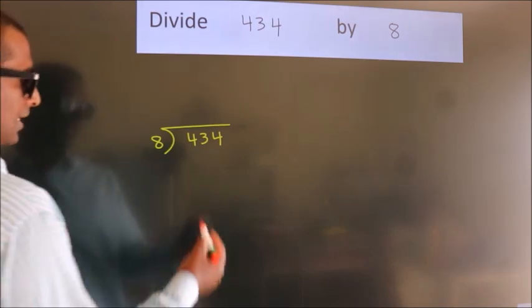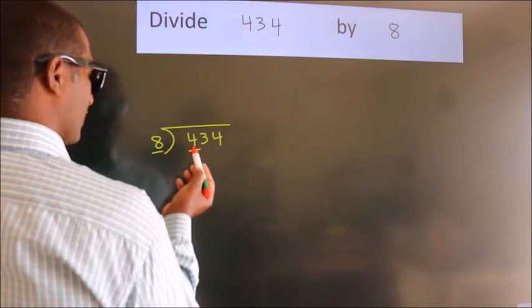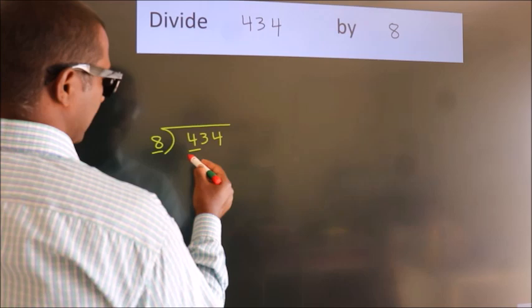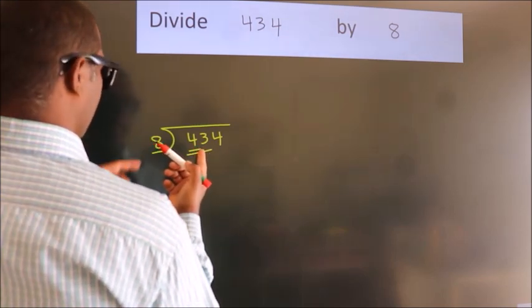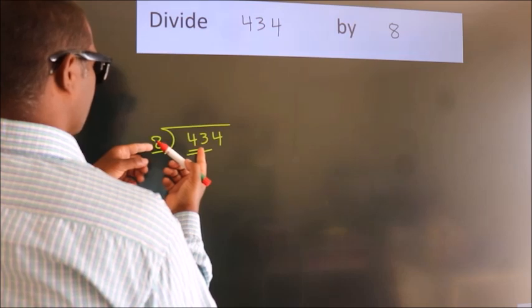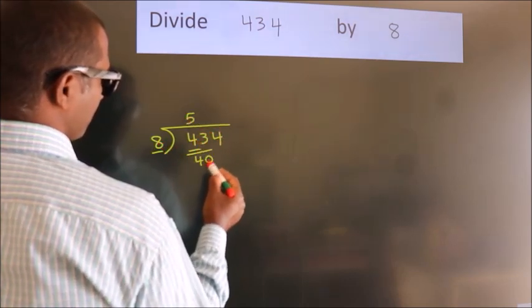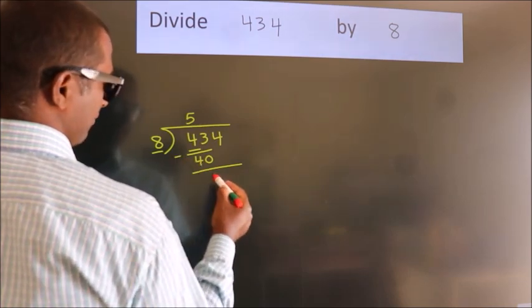Next, here we have 4, here 8. 4 is smaller than 8, so we should take two numbers, 43. A number close to 43 in the 8 table is 8 fives 40. Now we should subtract, we get 3.